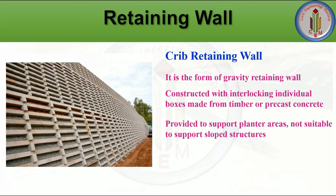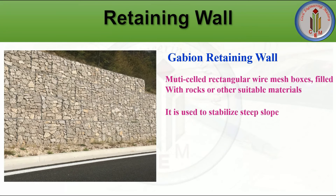The crib retaining wall is also a form of gravity retaining wall. It is provided to support planter areas but is not suitable for sloped structures. It is constructed with interlocking individual boxes made from timber or precast concrete, which are then filled with crushed stones or coarse granular materials to create a free-draining structure.